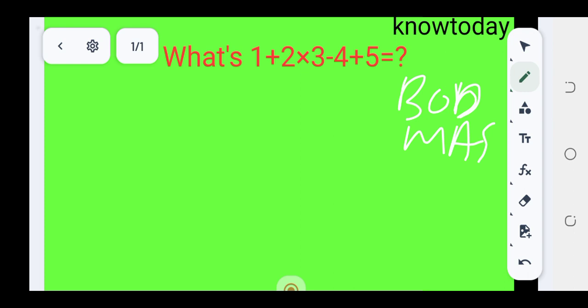If you look at this quiz carefully, you discover that what we need to go straight to is multiplication - this 2×3. So the quiz will be equal to 1 plus, you take this 2×3, it will give you 6, so 6-4+5 equals.